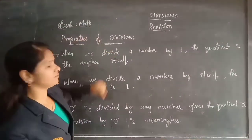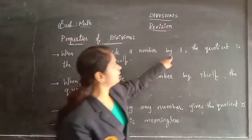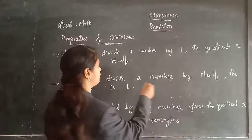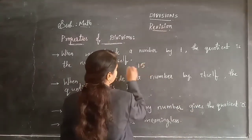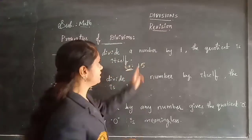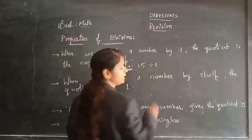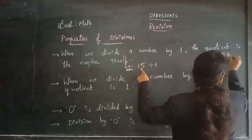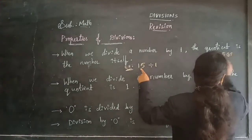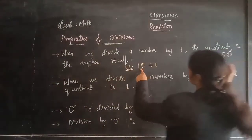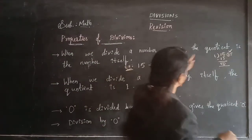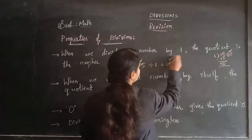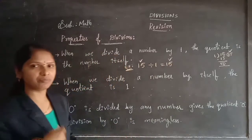Now let's see the properties of division. When we divide a number by 1, the quotient is the number itself. For example, 15 divided by 1: 1×15 = 15. What we got as an answer is 15 — nothing but the quotient is the number itself. The same number we got — this number and this number are equal.